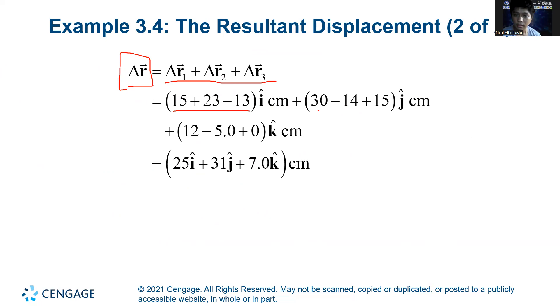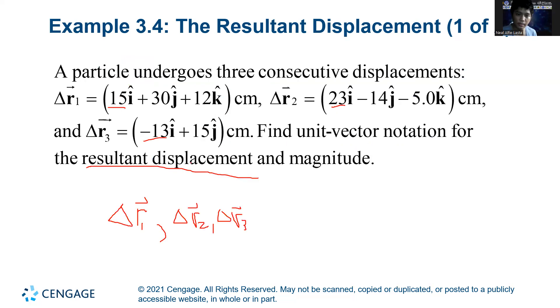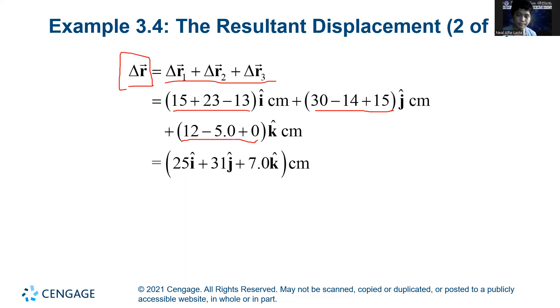And for the y component: 30, negative 14, and 15. And for the z component, we have here 12, negative 5, and 0. Because if you notice, delta r3 has no z component, which means that delta r3 lies only along the xy plane. Then you finally get the resultant in terms of its unit vectors: 25i hat plus 31j hat plus 7k hat.